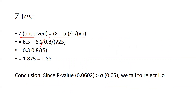That gives us a difference of 0.3, and 0.8 divided by 5. This is the final Z value — our calculated or observed value.